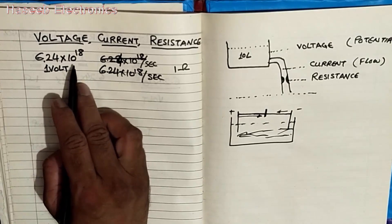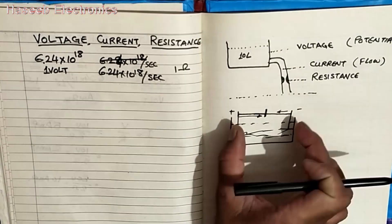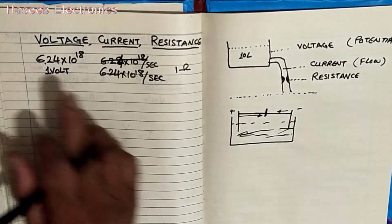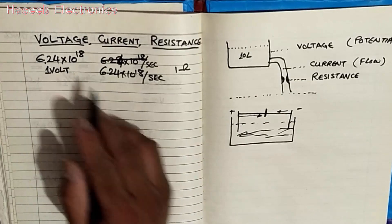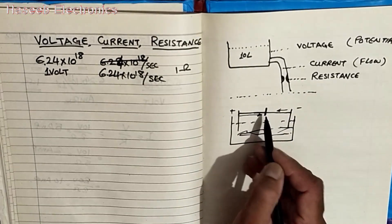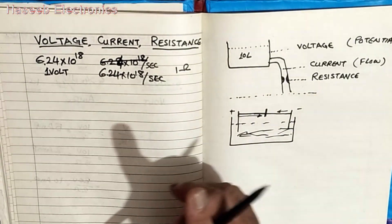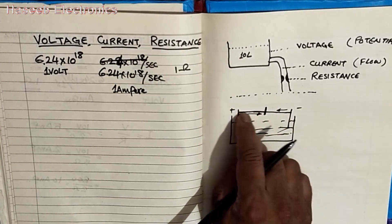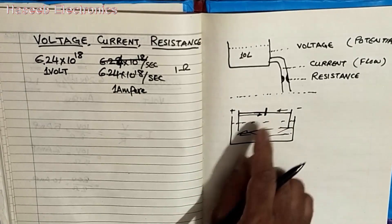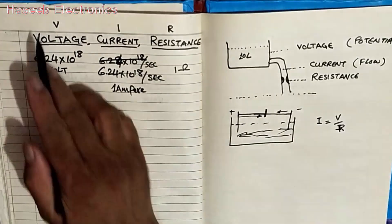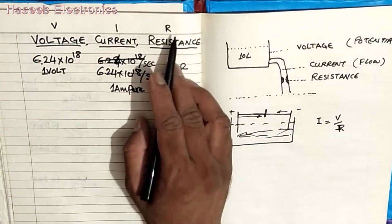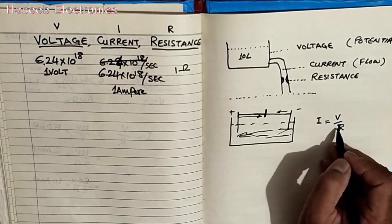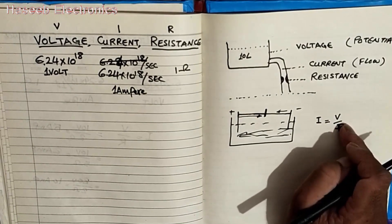If there is 6.24 × 10^18 electrons difference — excess here and deficiency there — that means it has 1 volt potential difference. If the same amount moves in 1 second from any point, it is called 1 ampere current. When we apply 1 volt and 1 ampere of current flows, that means there is 1 ohm resistance. So current is directly proportional to voltage and inversely proportional to resistance.